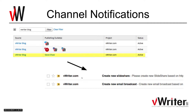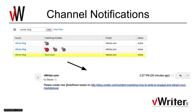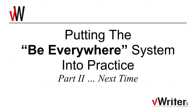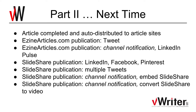Regarding the channel notifications I mentioned at the beginning - you can see here two emails that were sent out immediately when the content was published to the blog. The first email says 'Please create new SlideShare based on' followed by the link of the post - that's been taken straight from the new content on the blog feed and inserted into the email. A very similar email also went out about the email broadcast, with the same link replacement. It's up to you what text you put in these notifications.